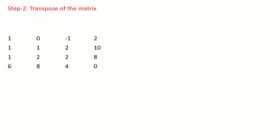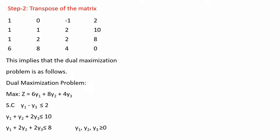The transpose of the previous matrix converts the first column to the first row, second column to the second row, and so on, giving us a new transpose matrix. This implies the dual maximization problem is: maximize z = 6y1 + 8y2 + 4y3, subjected to: y1 - y3 ≤ 1, y1 + y2 + 2y3 ≤ 10, y1 + 2y2 + 2y3 ≤ 8, where y1, y2, y3 ≥ 0. This is the dual maximization problem.